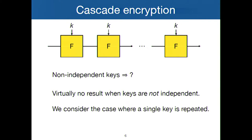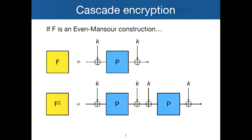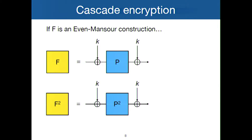You would expect quite naturally that in the same-key setting you can't hope for security amplification, since that would be a bit magical. Indeed, there is a simple counterexample. If you take the iterated function to be even-Mansour — which is a random permutation with a fixed-key XOR on each side — then squaring it causes the middle part to cancel out. You end up with the same construction but with a squared permutation in the middle. The best attack against even-Mansour doesn't really use the fact that a random permutation is in the middle, so the same attack works here. Therefore the advantage of the adversary is the same in both cases, and there is no security amplification.